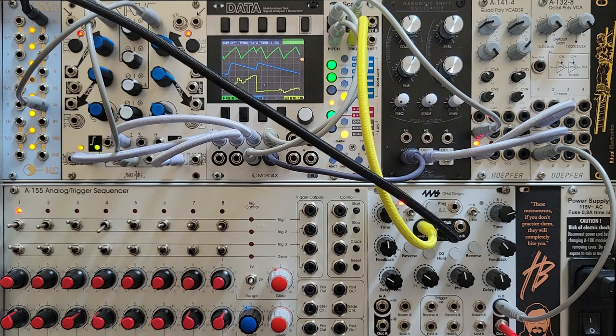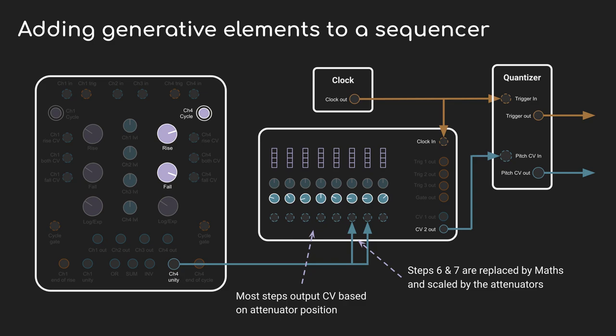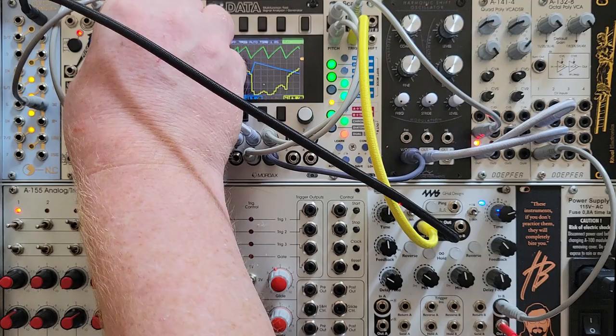Another technique I come back to is to use a sequencer like the Doepfer A-155 here. It allows you to put input CV for individual steps that override whatever the knobs say. So I'll take a repeating sequence that I like, and then I'll bring in different CV for two or three of the steps, so it almost repeats but not quite. But this is a big topic, and we could spend a lot of time talking about things here that aren't Maths-related, so let's move on.